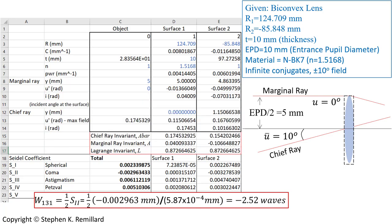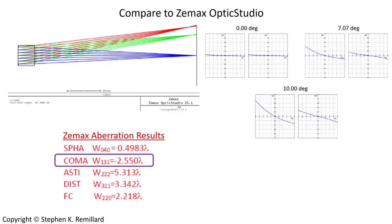Benchmarking against Zemax OpticStudio: the same lens is input and coma is calculated, giving W₁₃₁ of minus 2.550 wavelengths, compared to our minus 2.52 wavelengths — good agreement. Ray fan plots are generated at three field angles: 0°, 7°, and 10°. The left graph is tangential, the right is sagittal. At zero degrees there is no concavity — no coma for normal incidence. At 7° off-axis, concave up appears, confirming negative coma consistent with our minus sign.